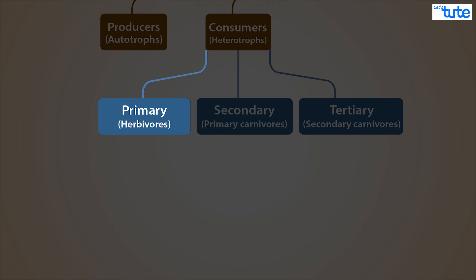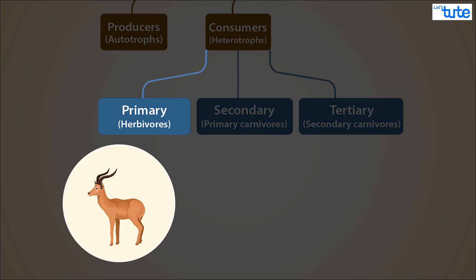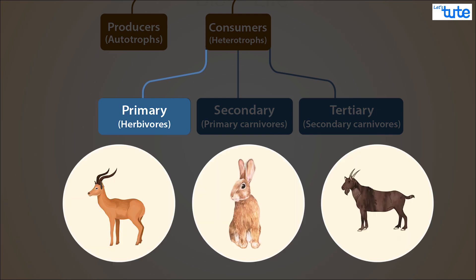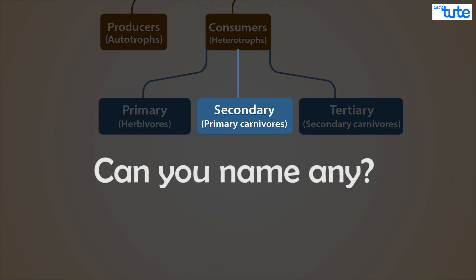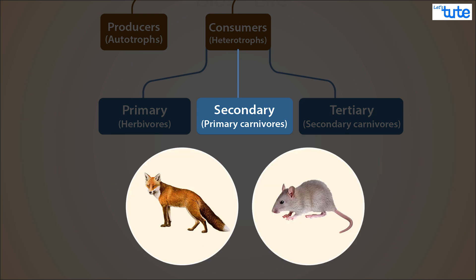Depending on the feeding behavior, consumers or heterotrophs can be further classified into three types. Organisms that feed on plants, like deer, rabbit, and goats, are called primary consumers or herbivores. The ones that feed on these herbivores or primary consumers are called secondary consumers or primary carnivores. Foxes and rats are some examples of secondary consumers.